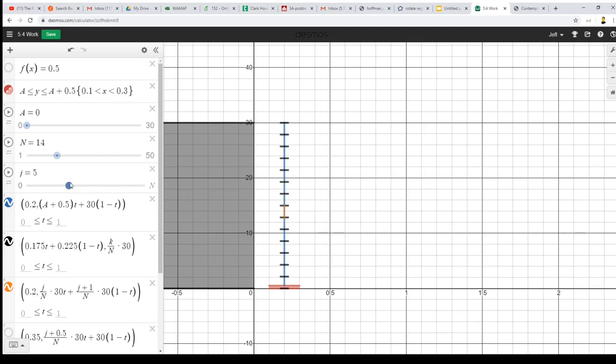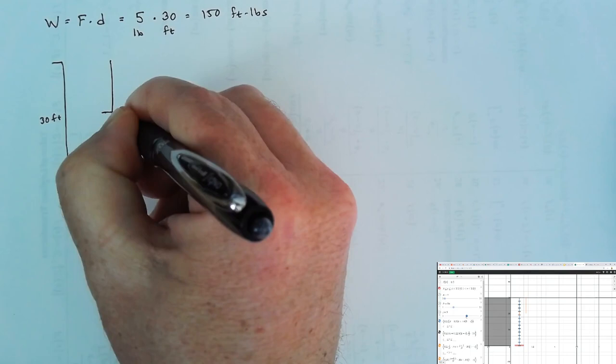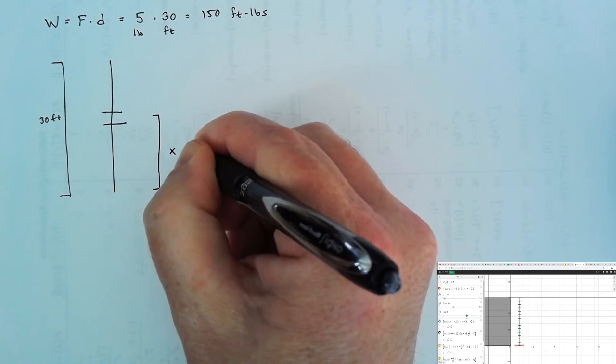Each of those pieces must get moved a different distance to get to the top of the building. If our building has a height of 30 feet, here's our rope. This is a representative slice of the rope. Let's say that this piece of rope is x feet above the ground, and its length is delta x feet.